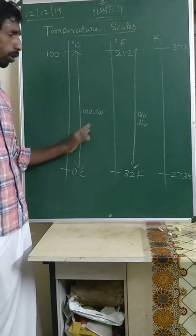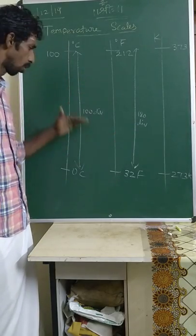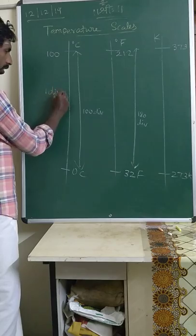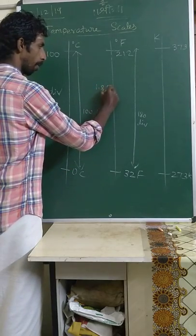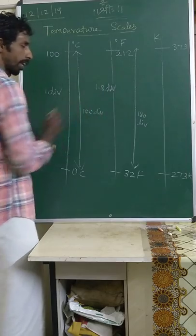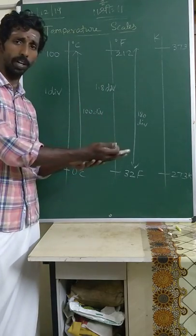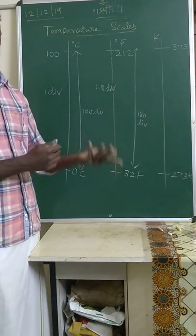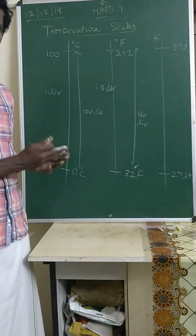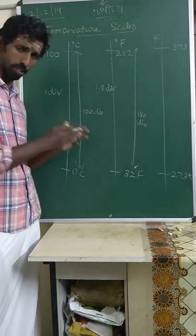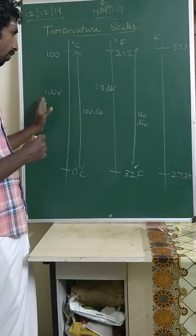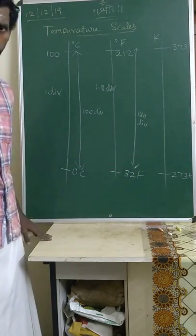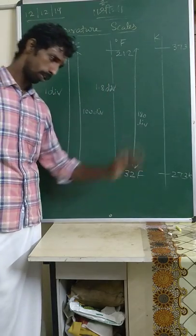Now regarding Fahrenheit: it has 180 divisions while Celsius has 100 divisions. If you divide equally, one division in Celsius corresponds to 1.8 divisions in Fahrenheit. However, 1°C is not simply 1.8°F because the Fahrenheit scale starts from 32, not 0. So 1°C actually corresponds to 33.8°F — we will discuss this further in another class.